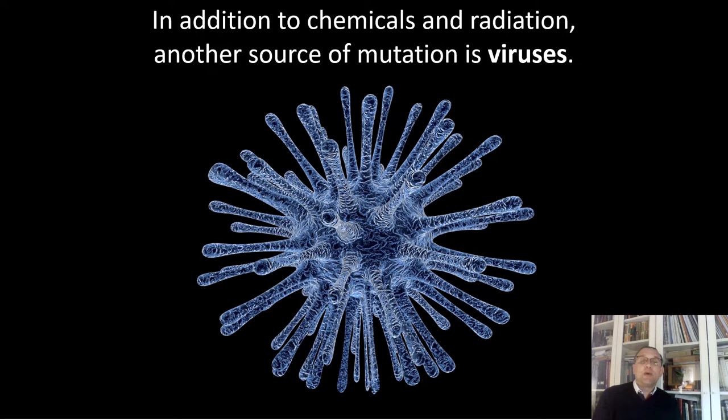Some viruses actually carry altered versions of genes picked up from previous host cells. These altered genes no longer function properly, and when inserted into a new host cell they cause dysregulation and can lead to cancerous growth. Viruses can also prevent cells from committing suicide — a process known as apoptosis. Because an old cell can make mistakes and become malignant, cells commit suicide. Cancerous cells are known as immortal cells since they do not die but reproduce endlessly as long as they have food.